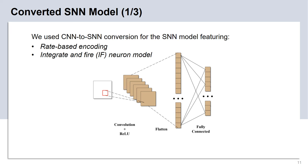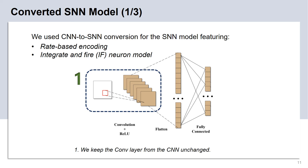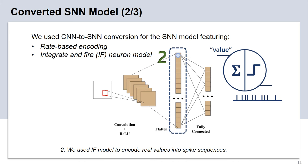Next, I'll introduce our proposed SNN-based decoding method. Our SNN model is converted from the CNN model. The proposed SNN model is rate-based and applies the integrate-and-fire neuron model. In order to maintain the decoding accuracy of the CNN model, we keep the convolution layer of the CNN unchanged and convert the rest of the CNN model into the SNN. After the convolution and ReLU operation, the feature maps are flattened into a one-dimensional vector. For each element in the vector, we apply the integrate-and-fire neuron model to convert the value of the element into a spike train.